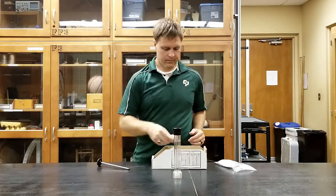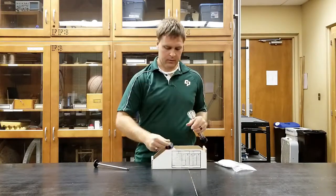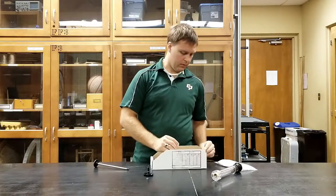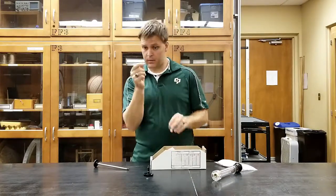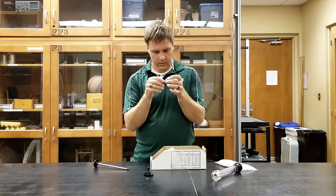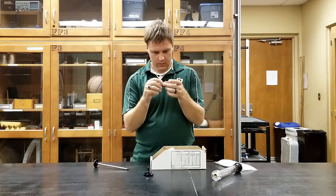Next, you want to get a tiny piece of cotton. Pull the cotton and spread it out as much as possible to increase the surface area. Put it in the bottom of the tube.